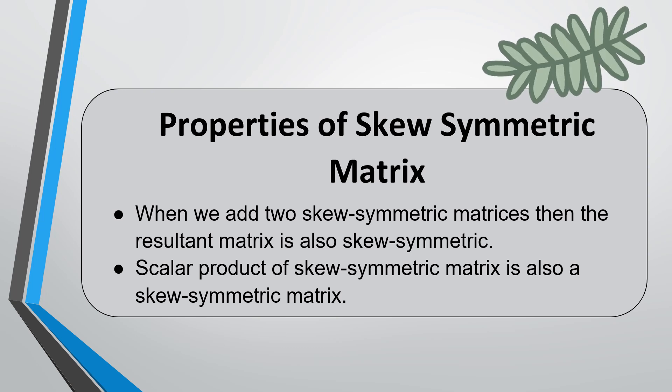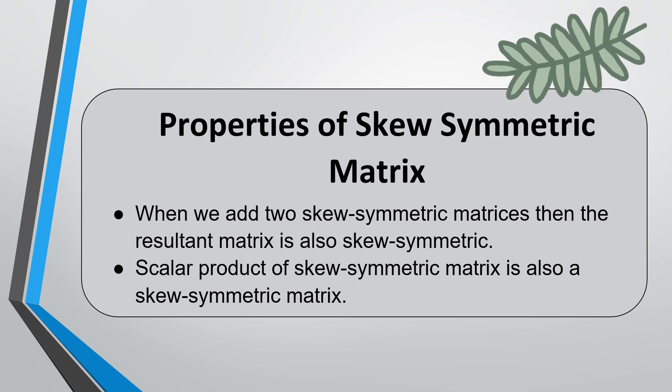Fourth, when an identity matrix is added to a skew symmetric matrix, the resultant matrix is invertible. Fifth, the determinant of a skew symmetric matrix is non-negative.